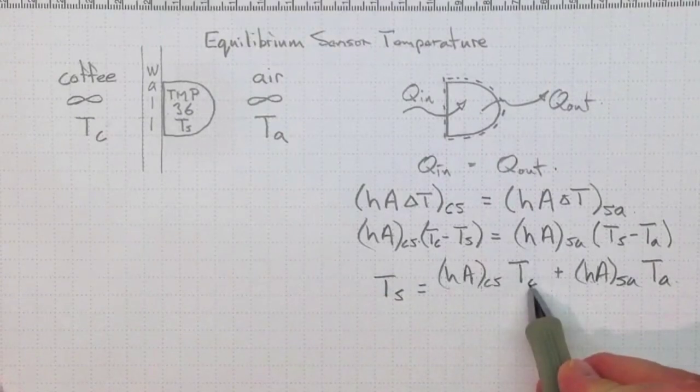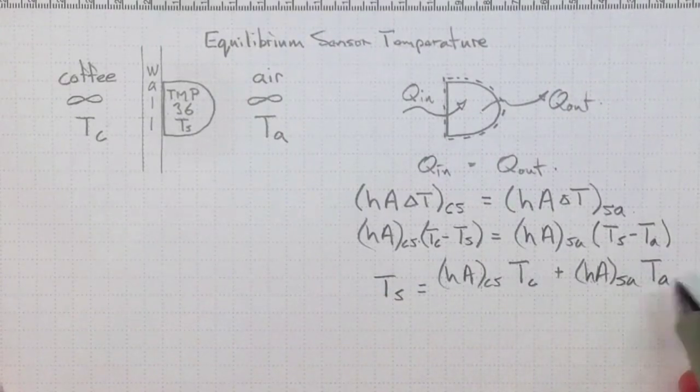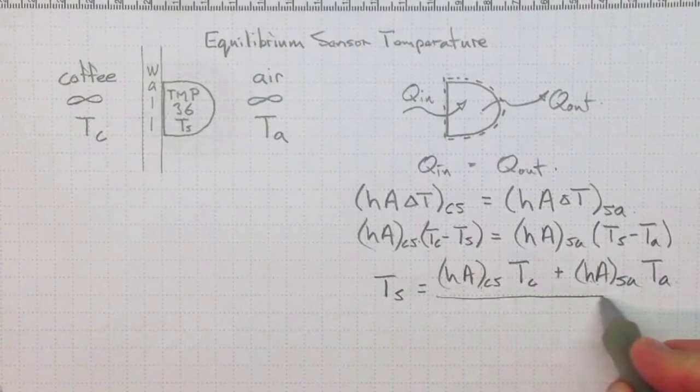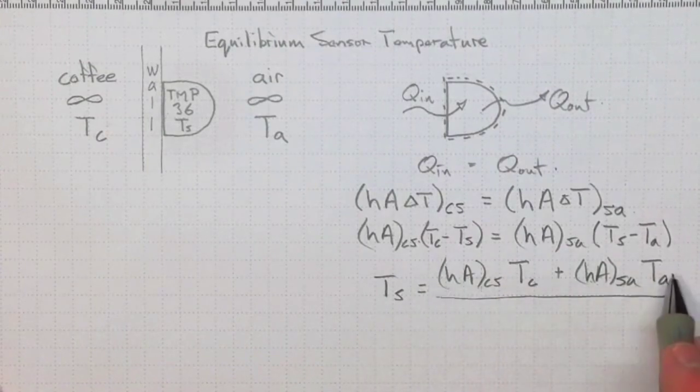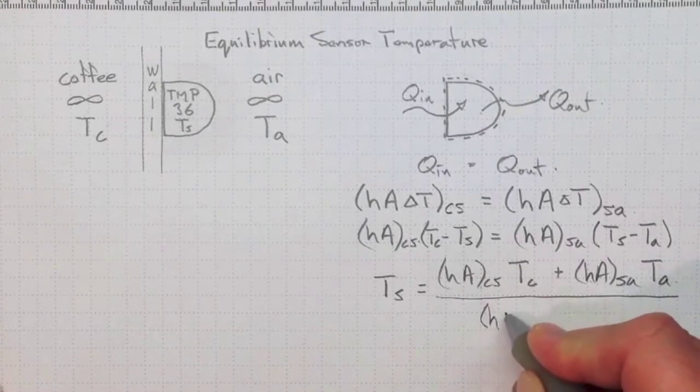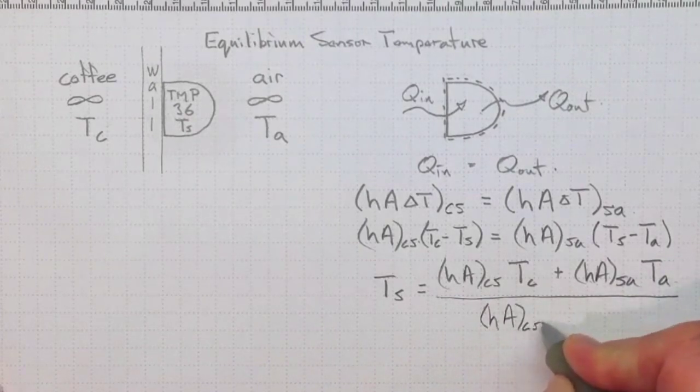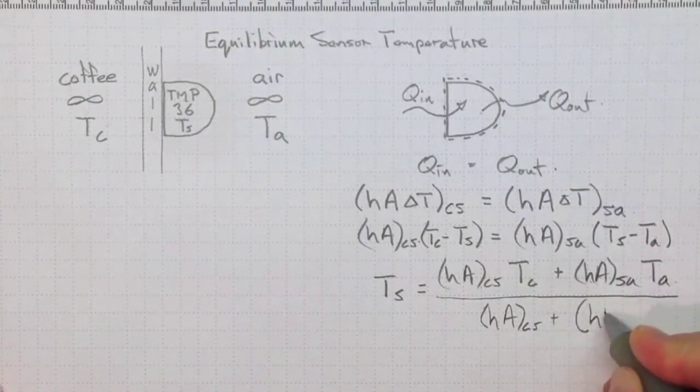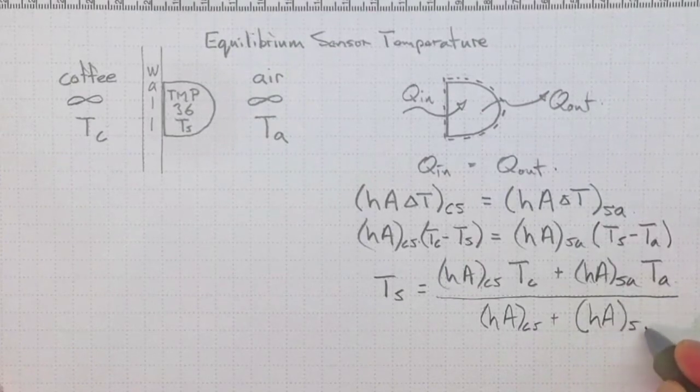And then to make it actually come out in temperature units, we wind up with hA_CS plus hA_SA in the denominator.